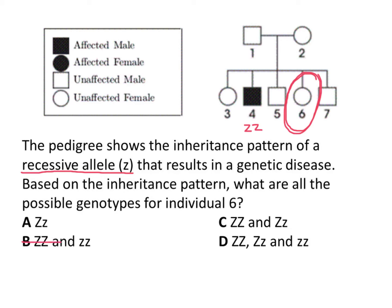Knowing that, I can cross out B and D because individual six is not affected by this disease. Since it's not affected, that means it has at least one dominant allele. Now it could be homozygous dominant or it could be heterozygous. There's really no way to know for sure just by looking at this pedigree, but both of those are options. The question asks what are the possible genotypes, so based on this inheritance pattern and this pedigree, answer choice C shows the possible genotypes for individual six.